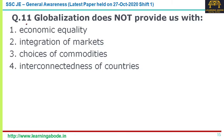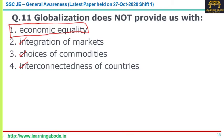Question eleven: globalization does not provide us with which of the following? Options are economic equality, integration of markets, choice of commodities, and interconnectedness of countries. Globalization can be defined as the speed-up of movements and exchange of human beings, goods and services, capital, technologies, and cultural practices all over the planet. Interconnectedness of countries, choice of commodities, and integration of markets are all factors of globalization, but economic equality is not guaranteed. Answer is option one.